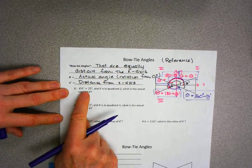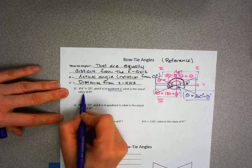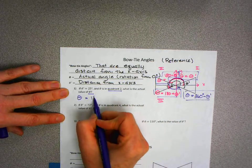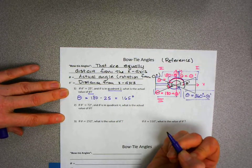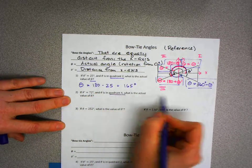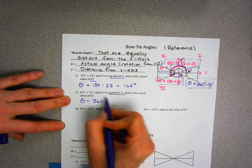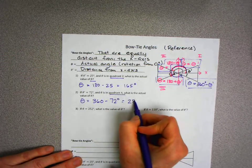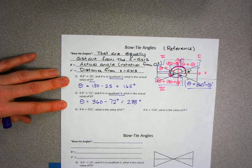If theta prime is 25 and we're in quadrant two, theta equals 180 minus 25, which equals 165 degrees. If theta prime is 72 and theta is in quadrant four, then theta equals 360 minus 72 degrees, which gives 288 degrees.